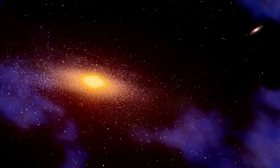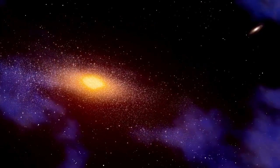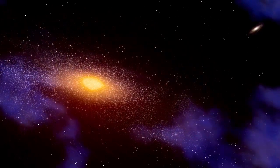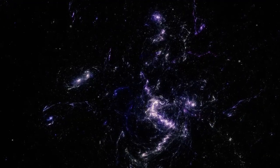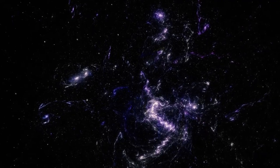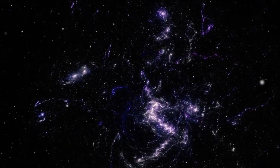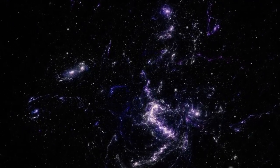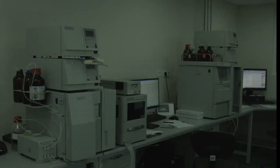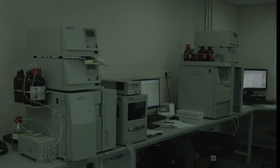For decades, scientists believed they had a clear picture of how the universe evolved. First came the Big Bang, then a Dark Age. Slowly stars began to form, then galaxies and eventually life. The further back in time we look, the simpler things should appear, just faint hydrogen clouds and scattered particles. That's what everyone expected Webb to find when it gazed at a supposedly quiet, empty stretch of sky.